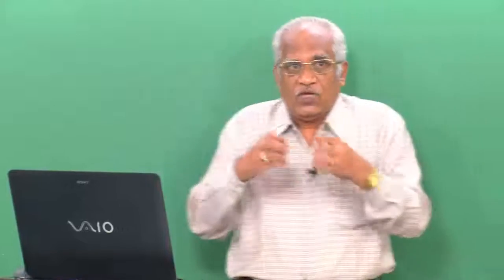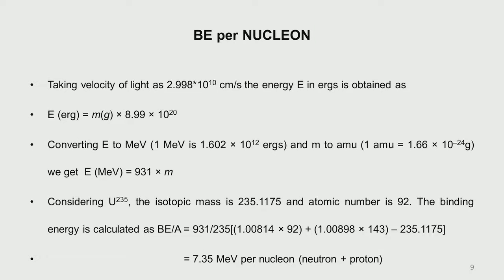This energy equivalent of mass defect is termed the binding energy of the nucleus — the energy which binds neutrons and protons together. When Z protons and (A minus Z) neutrons are brought together, energy is released; if we give back that same energy, we can break the nucleus, which is fission. The velocity of light is about 2.998 × 10¹⁰ cm/s. Converting energy from ergs to MeV, we get: binding energy in MeV = 931 × mass defect.